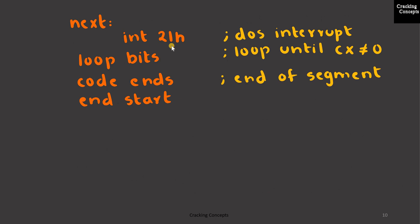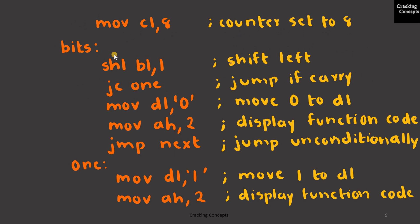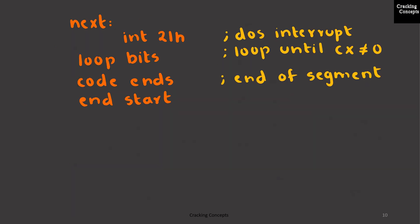Then the entire instructions are repeated, that is given as LOOP BITS. The set of instructions starting from the BITS label will be repeated until the value of CL is 0. Then the final result is obtained after the loop is completed. Then we will end the code segment and end the START label.